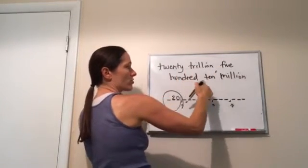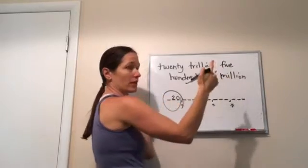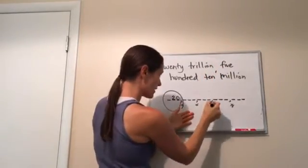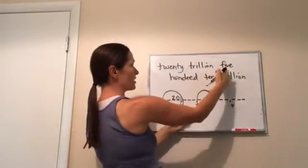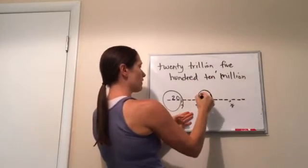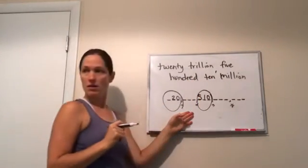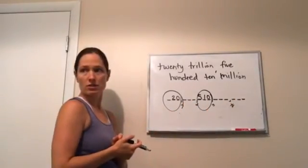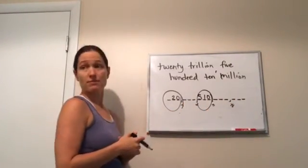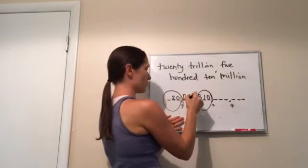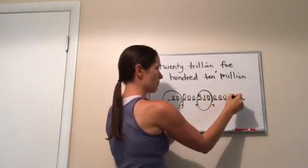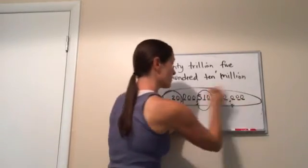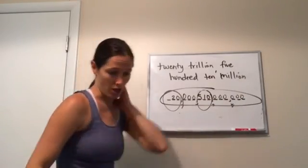Now five hundred ten million. So now I go to my million section and put five hundred ten. Five hundred ten. See how I did that? Now so what happens with the rest of these dashes? I fill them in with zeros. You're exactly right. And that is the correct number. Good job. All right.